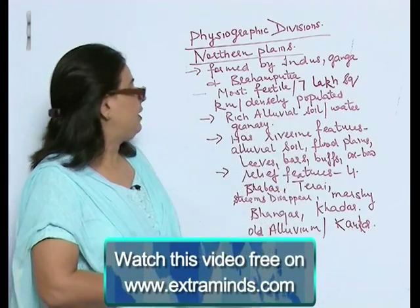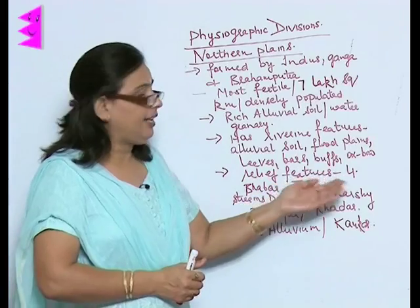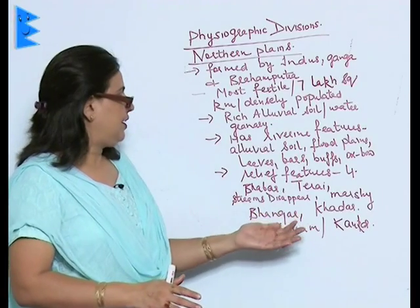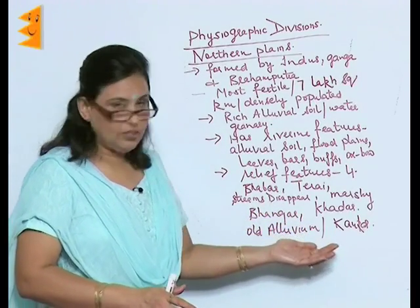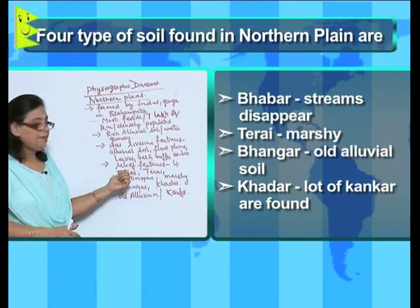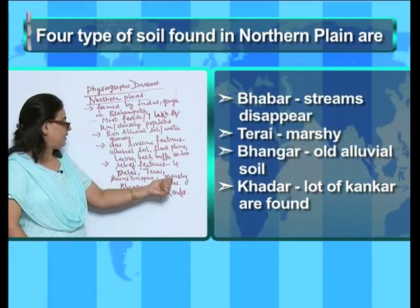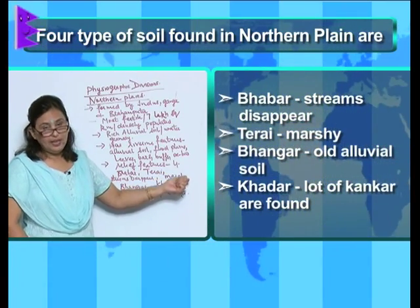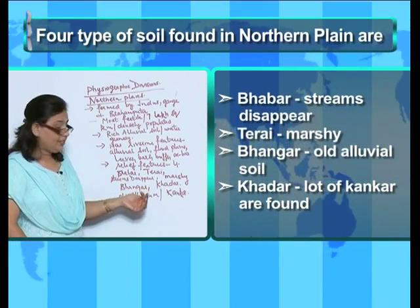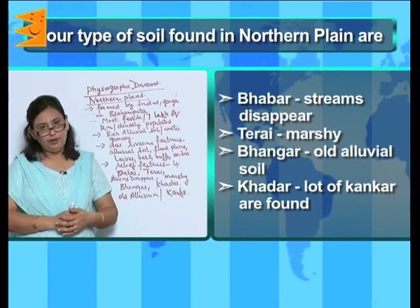If we divide the Northern Plain according to relief features, we can divide it into four kinds: Bhabar, Terai, Bhangar, and Khadar. In the Bhabar part, streams disappear, whereas in the Terai it is marshy and a lot of wildlife is found. Bhangar is old alluvium soil, and in the Khadar we see a lot of kankars found.